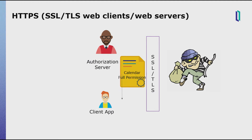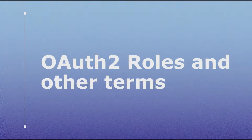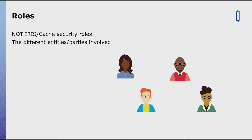OAuth assumes secure communication. The HTTP requests should be protected with SSL/TLS to make sure there's no eavesdropping, no message alteration, no man in the middle — meaning clients should connect using SSL/TLS and all web servers should be set up for SSL/TLS. That way no one can steal the token or anything like that. Some browsers may not properly pass on certain messages if they detect there is no SSL/TLS. Let's review some OAuth 2 roles and other terms, some of which we saw in our story earlier.